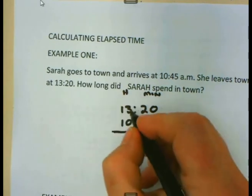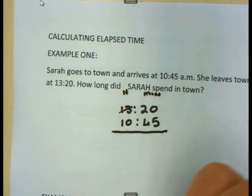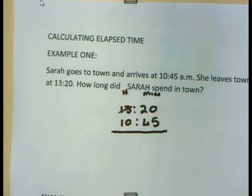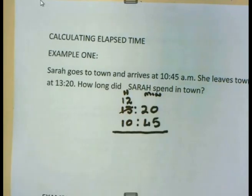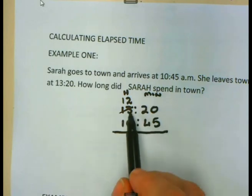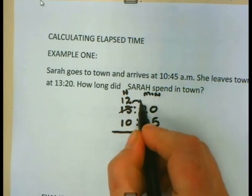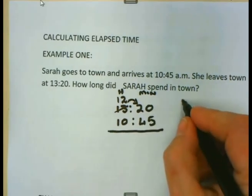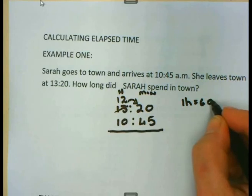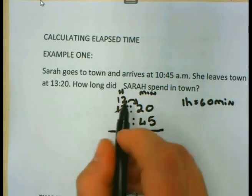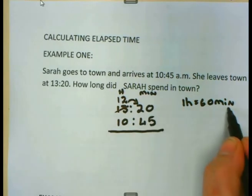We are going to borrow here from the hours. We are going to borrow one hour so that this will become 12 hours. But now, when I bring that one hour to minutes, the moment it comes this side, I must remember that one hour is 60 minutes. So although I am bringing one hour, when I convert it to minutes, it is 60 minutes.